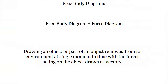This is a video on how to create free body diagrams. Free body diagrams are also sometimes known as force diagrams. A free body diagram is a drawing of an object or part of an object removed from its environment at a single moment in time, with the forces acting on that object drawn as vectors — basically arrows showing the direction they're pushing or pulling on the object.